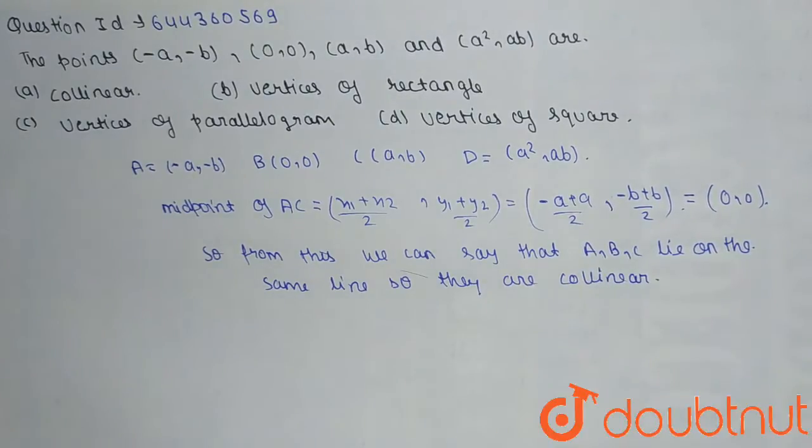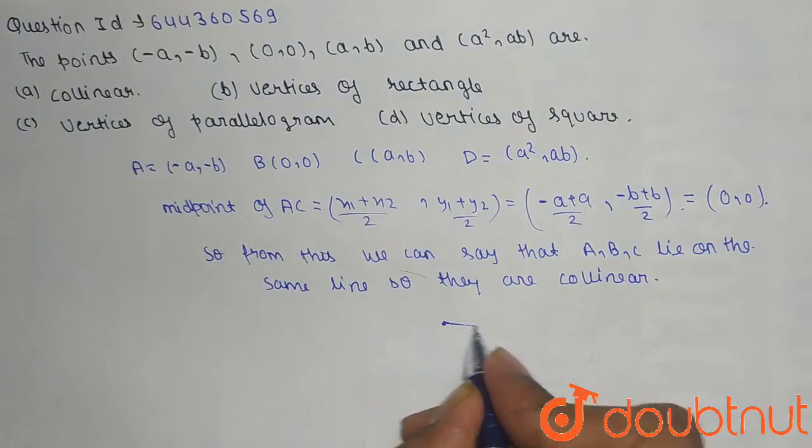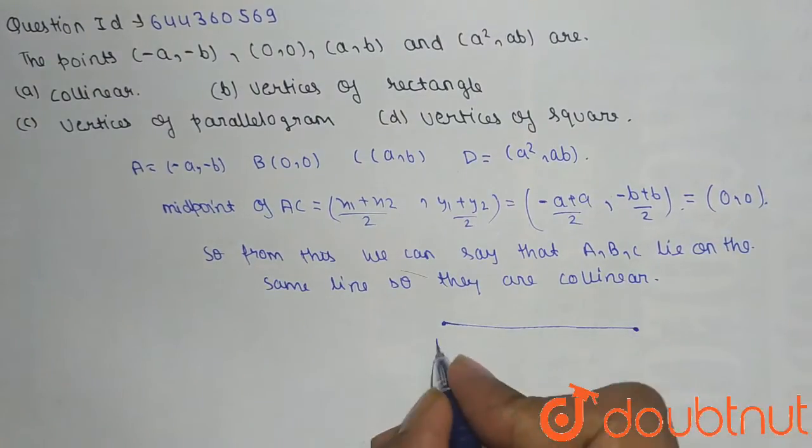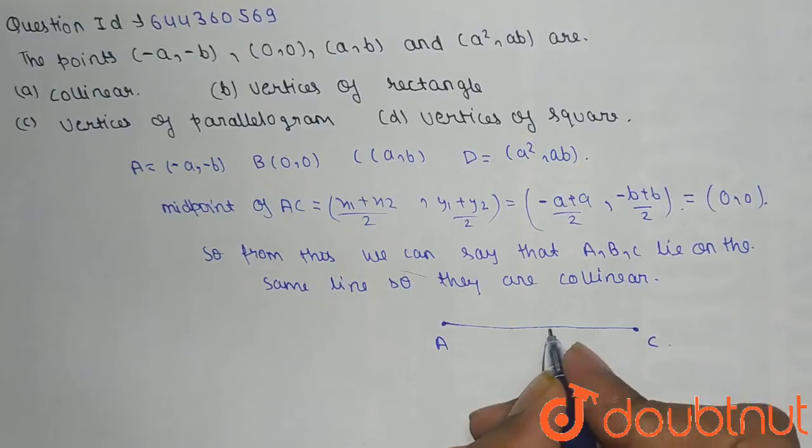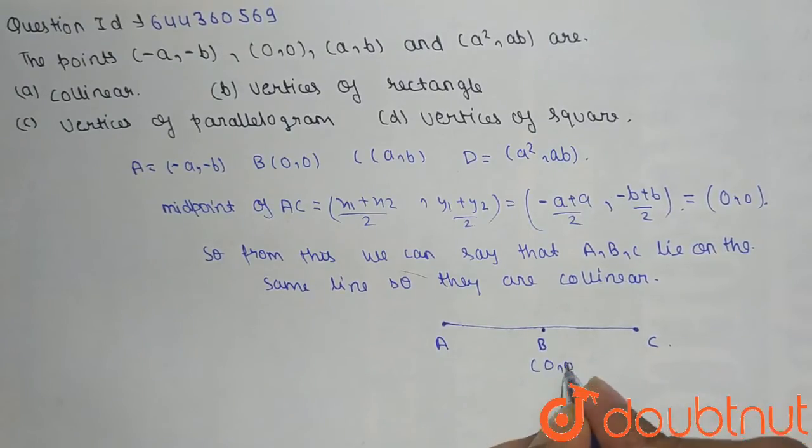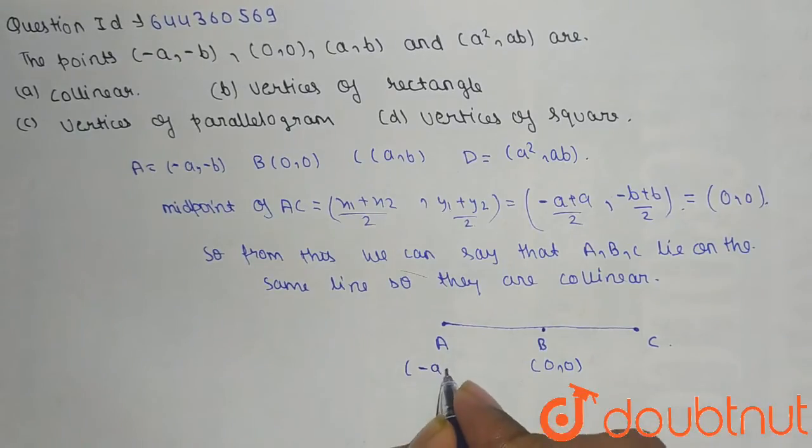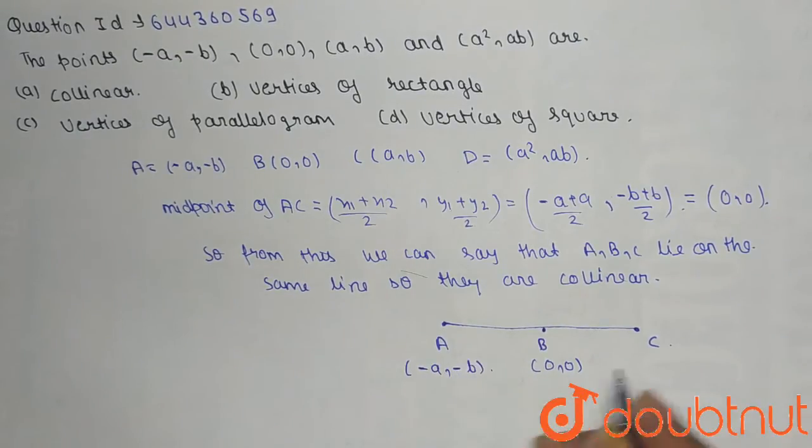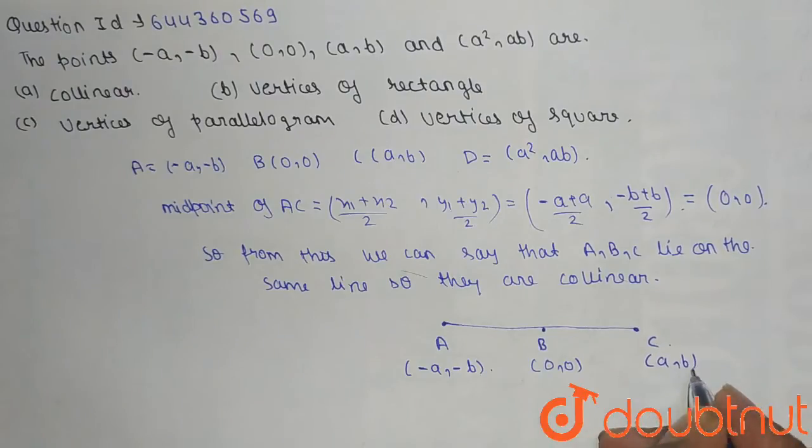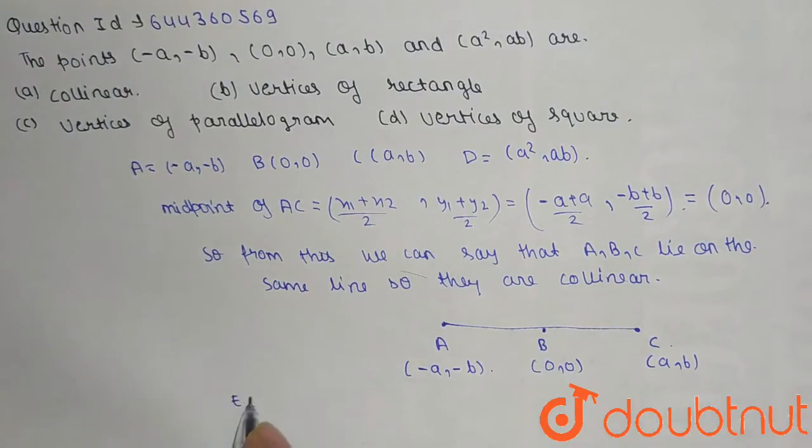This is A, this is C, this is B (0, 0), (-a, -b) and this is (a, b). Now we have to write the equation of AC.